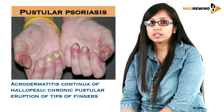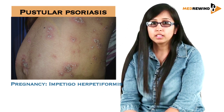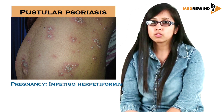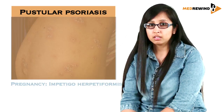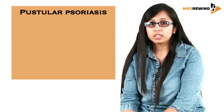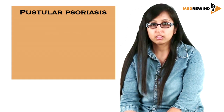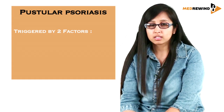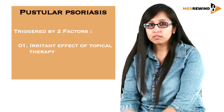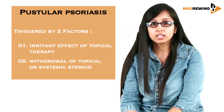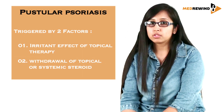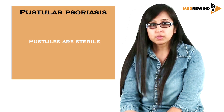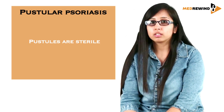Third is acrodermatitis continua of Hallopeau, which presents as pustular lesions over the tips of the fingers, most commonly associated with nail changes. Fourth is a generalized pustular variant in pregnancy, known as impetigo herpetiformis. These pustular lesions are most commonly triggered by two factors: the irritant effect of topical therapy, or withdrawal of steroids. The pustules are sterile and not infected.